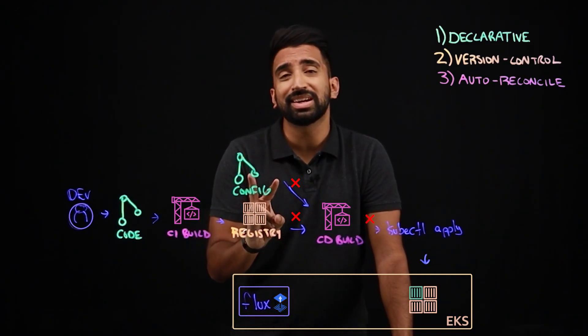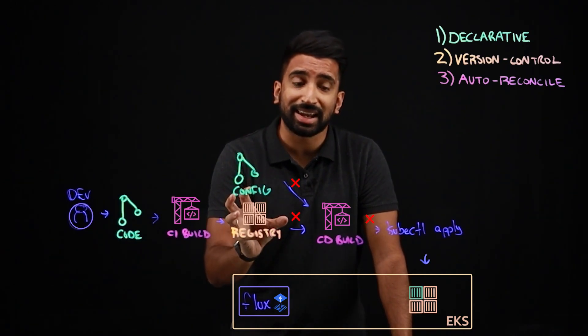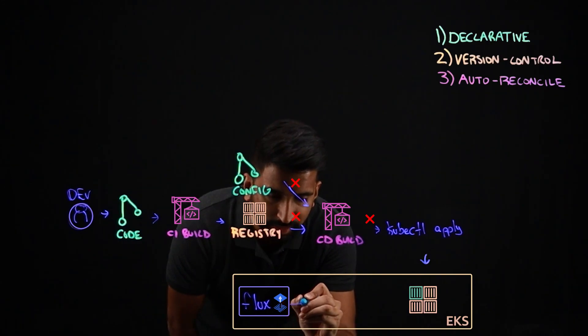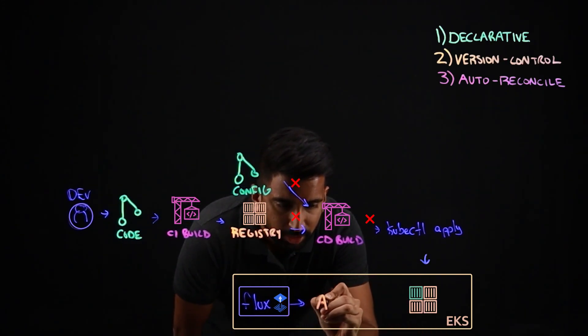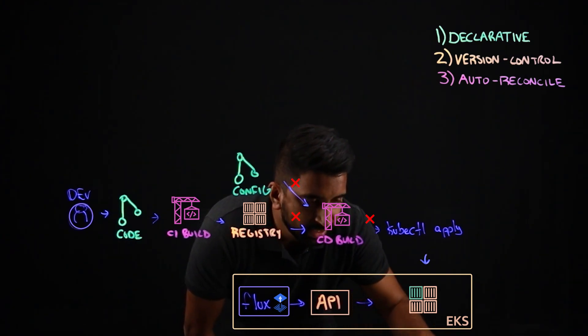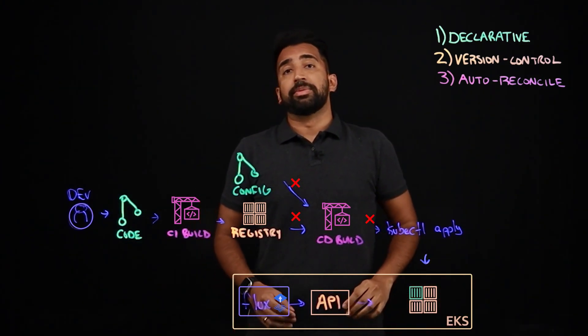And now Flux is going to do two things. The obvious one is it's going to take that image and go ahead and deploy it into the cluster. So that could look something like Flux talking to the Kubernetes API server. Obviously, that puts it in the CD, and then goes ahead and pushes that container image.